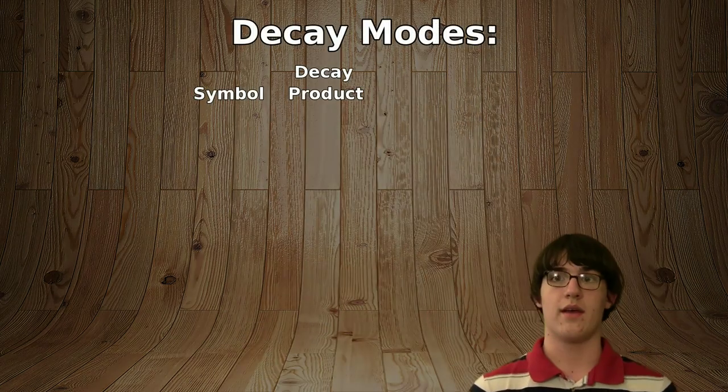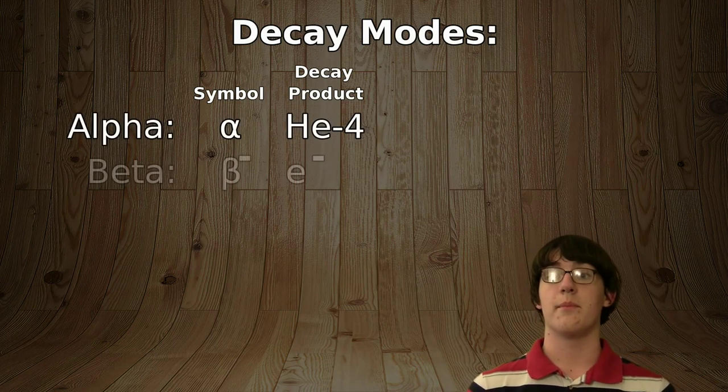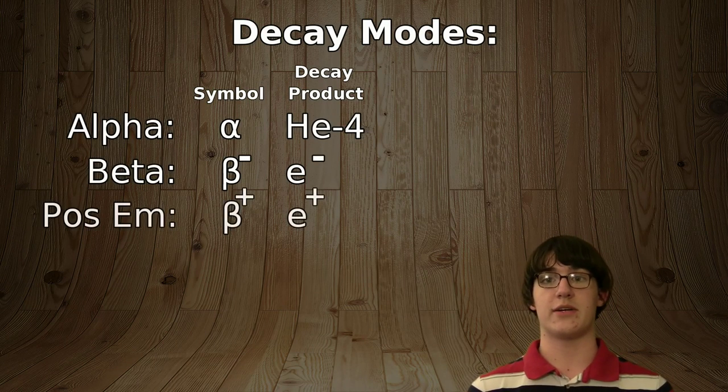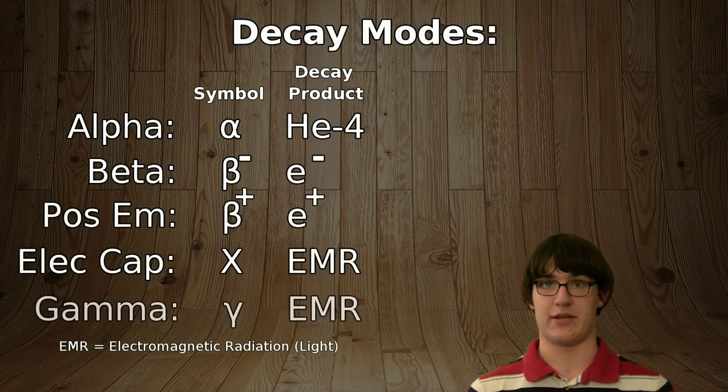These two situations are where radioactive decay takes place. There are five major types of radioactive decay. These are called decay modes. There is alpha decay, beta decay, positron emission, electron capture, and gamma emission.